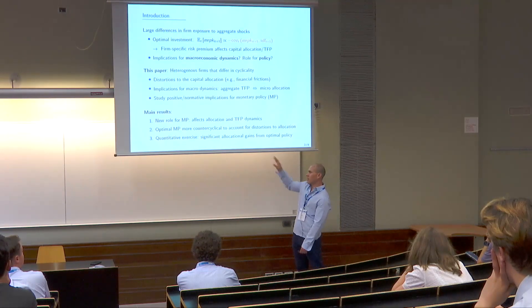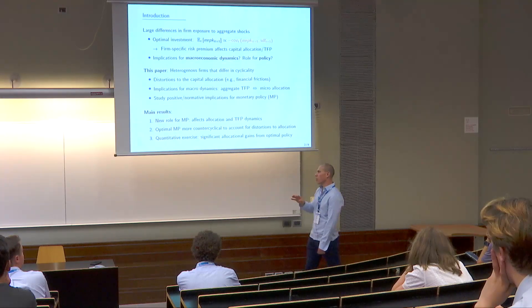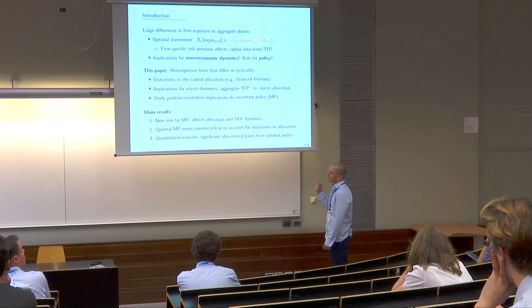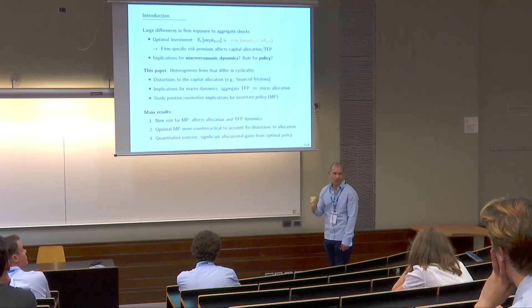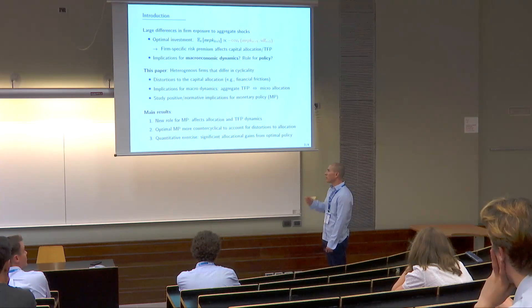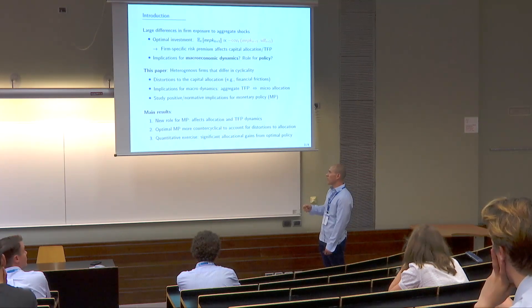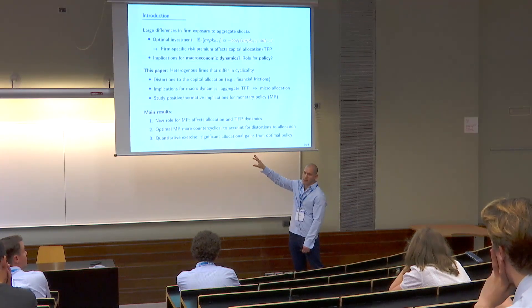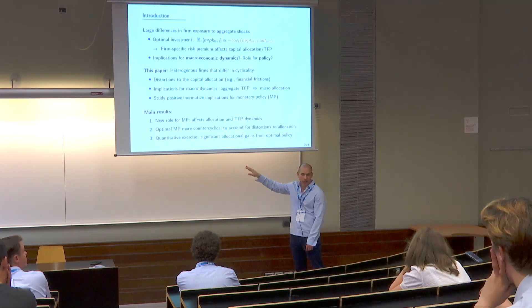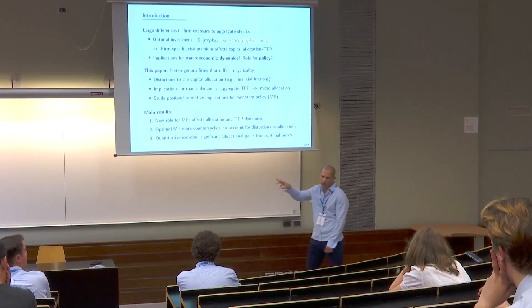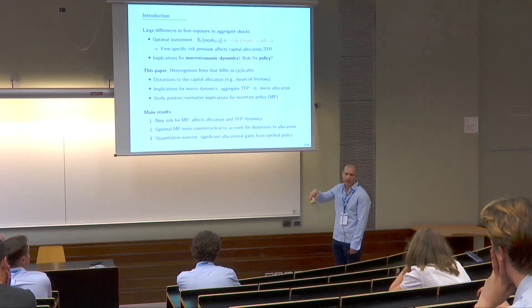The third result: a simple quantitative exercise illustrates potentially significant welfare gains from optimal policy. More interestingly, the lion's share of those gains come from correcting potential inefficiencies in the allocation, relative to the more standard gains from output gap and inflation volatility stabilization.